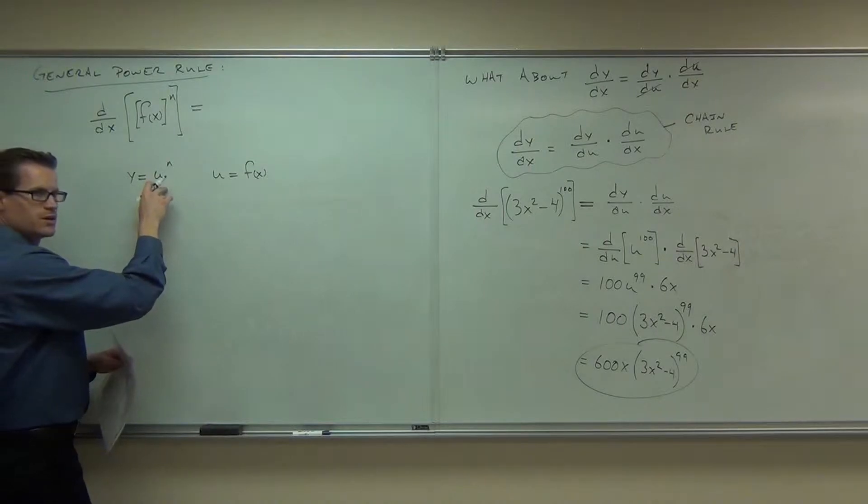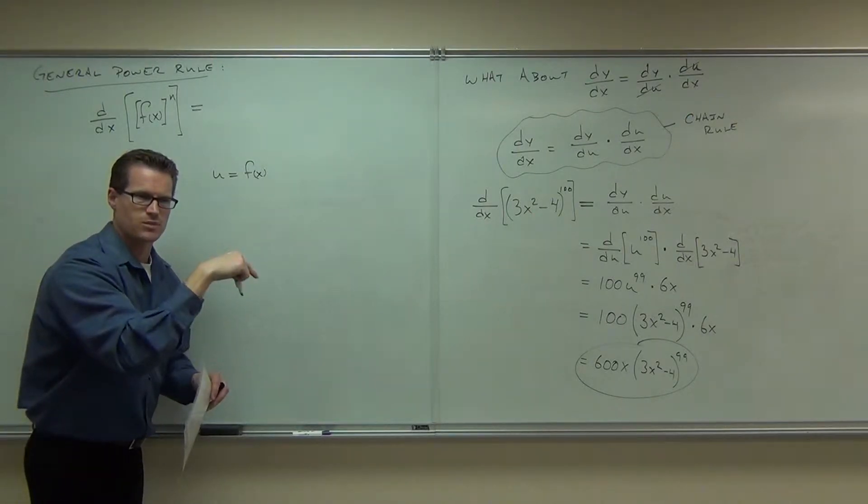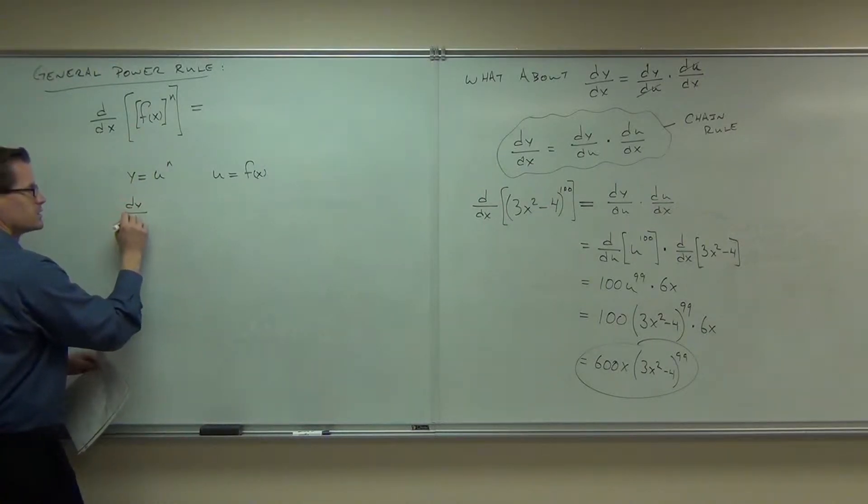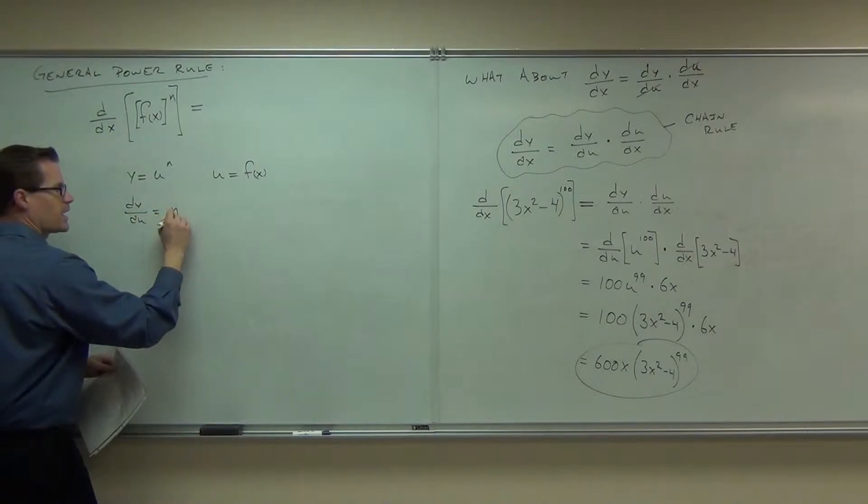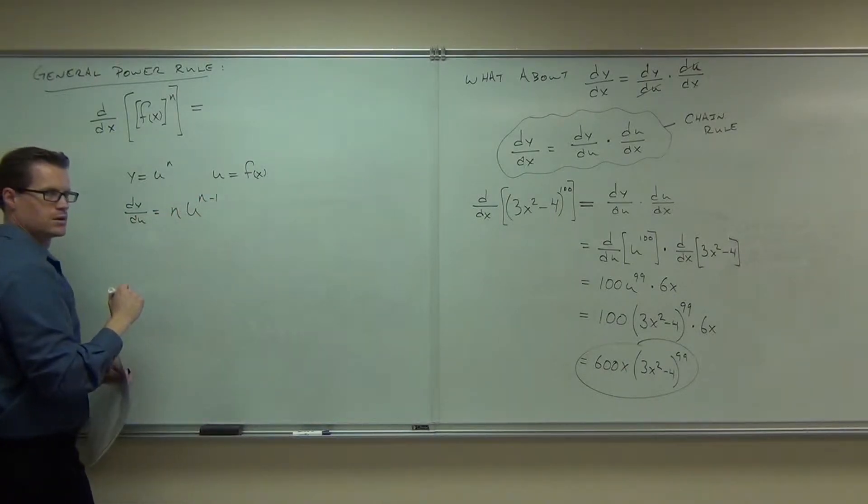Well, this says, okay, if I took the derivative of u to the n, remember your power rule? The power rule says you bring down the exponent, you subtract 1 from it. This would say dy/du would equal n times u to the n minus 1. Follow me so far.